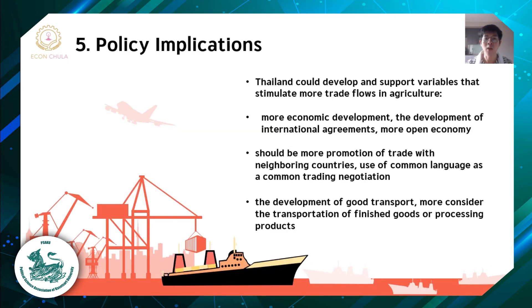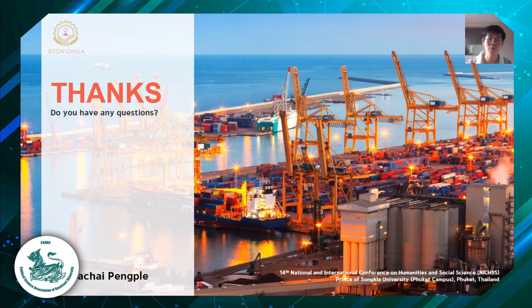Policy implications: Thailand could develop and support variables that stimulate more trade flows in agriculture, including greater economic development, the development of international trade agreements, and more open economies. The government should promote trade with neighboring countries and use common language as a tool in trade negotiations. Moreover, the development of goods transport should consider the transportation of finished goods or processed products in the near future. Thank you for your attention.